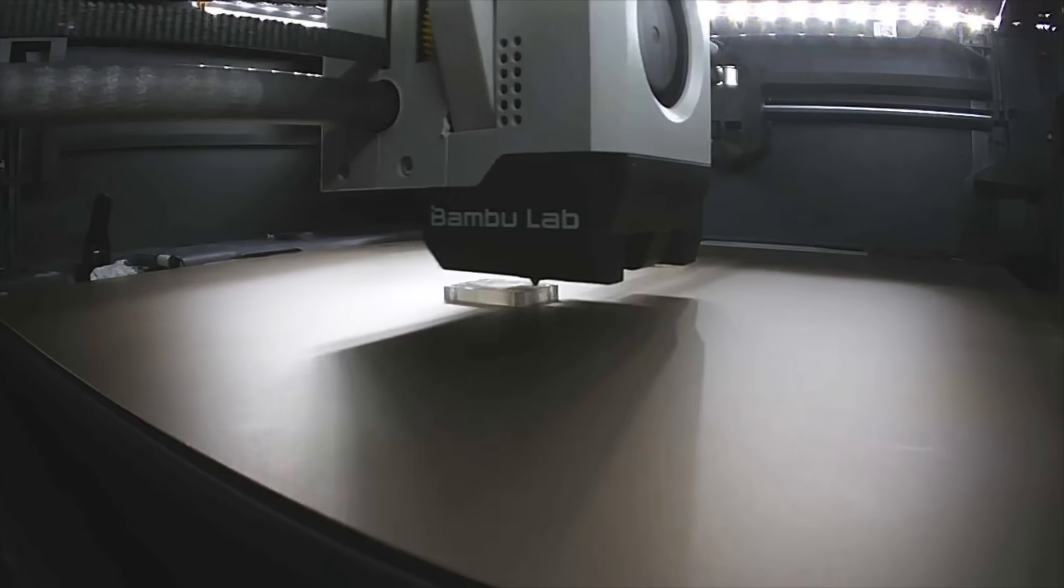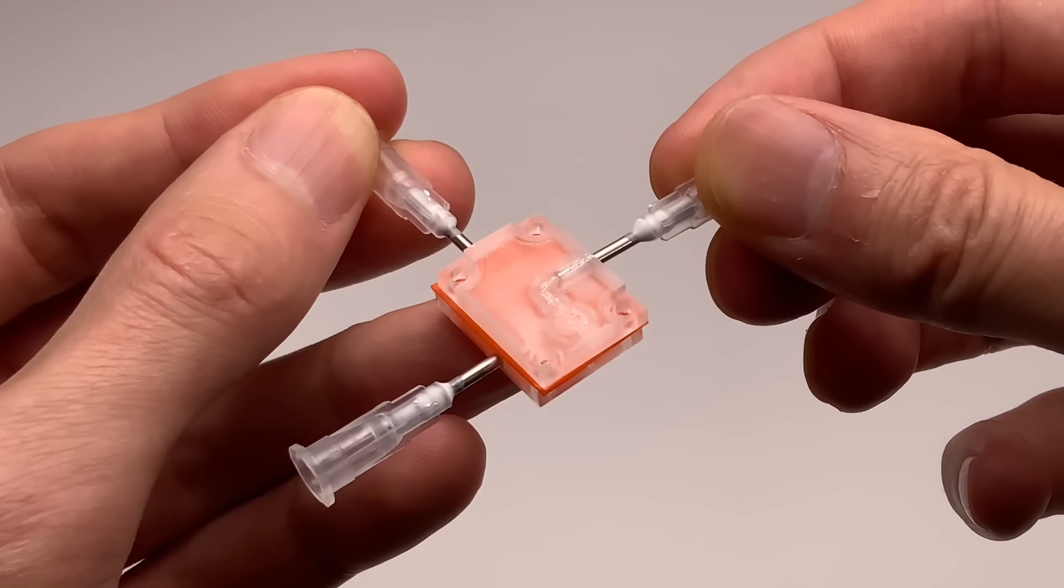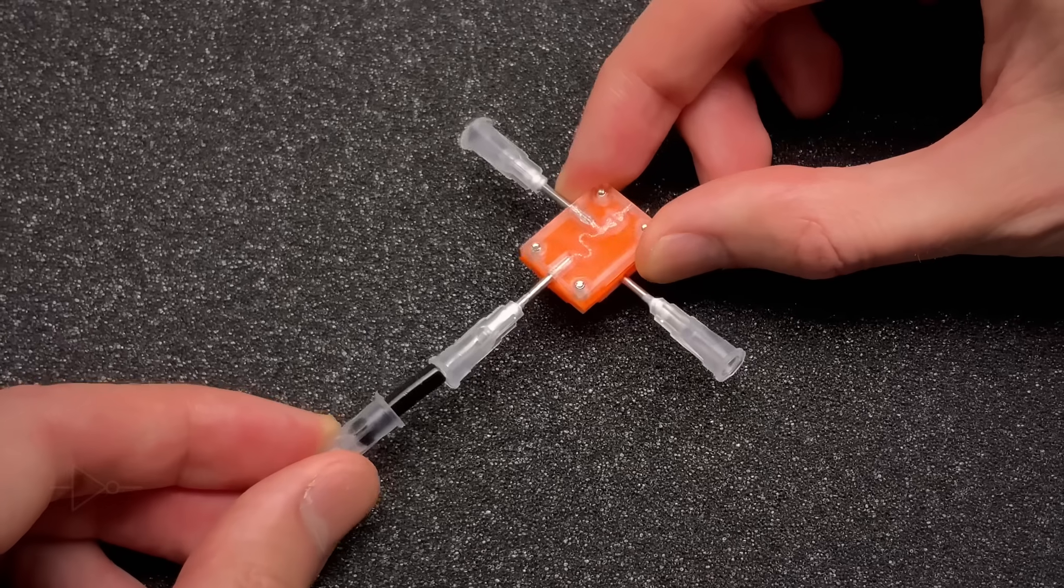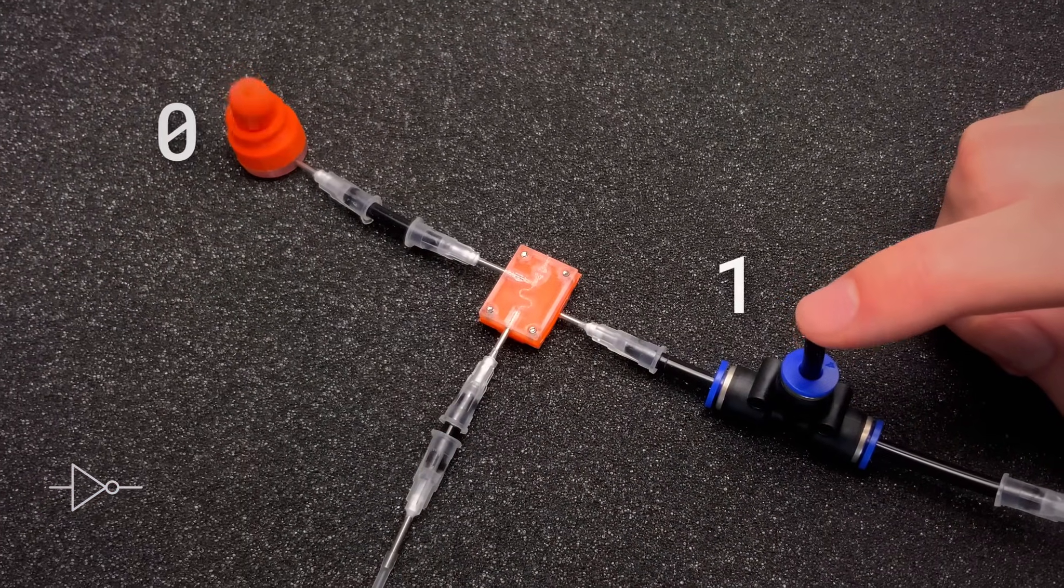As before, we print the rigid channels, cut out a little rectangle from our squishy wafer, and assemble the full stack. Now let's test it. It flips the signal. It works.